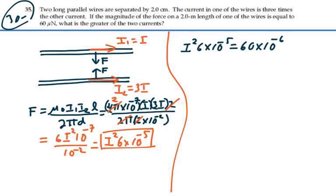And so if we divide both sides, we've got I² is equal to 60 times 10⁻⁶ over 6 times 10⁻⁵. 60 times 10⁻⁶ is 6 times 10⁻⁵, so that's equal to 1.